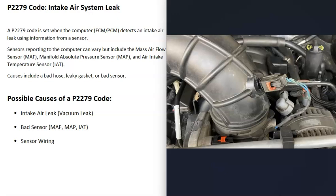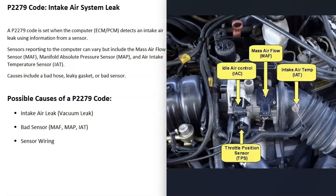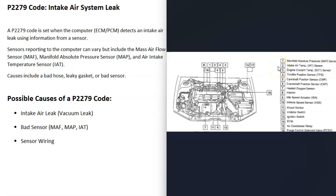The next thing that could cause a P2279 code is a bad sensor. There might not be any actual intake air leak, but the computer thinks there is because it's getting bad information. The sensors that can report this include the mass airflow sensor (MAF), the manifold absolute pressure sensor (MAP), and the intake air temperature sensor (IAT). On older vehicles it's usually just a MAF sensor, but it can vary. On some vehicles the MAP and MAF are built into one sensor.